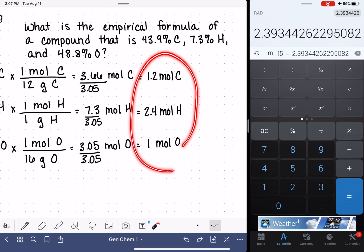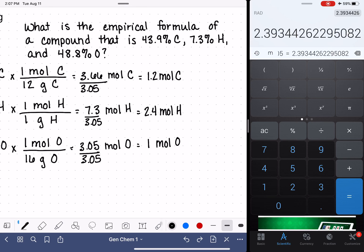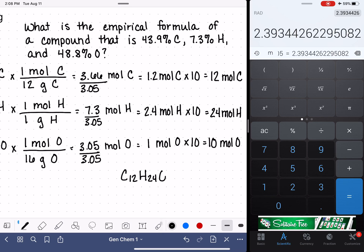These numbers should be working out to be nice clean numbers. For me personally, when I get into a situation like this, the next step I like to take is just to multiply everything by 10. So I like to move my decimal point over. So now I have 12 moles of carbon, I have 24 moles of hydrogen, and I have 10 moles of oxygen.